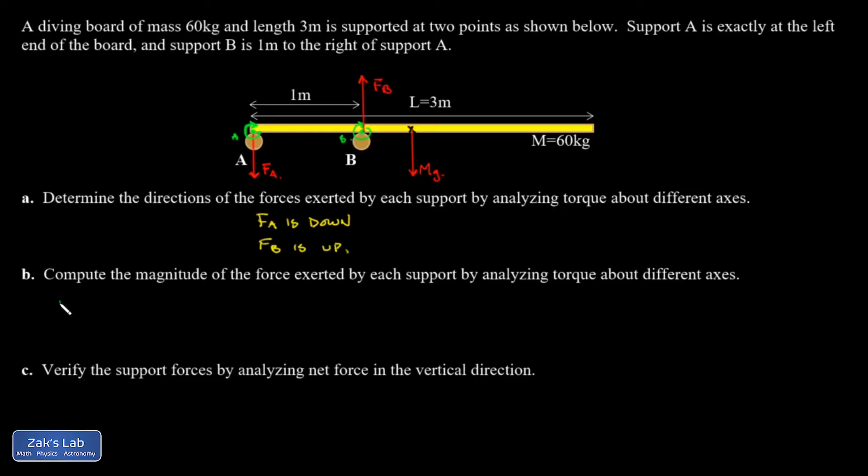And let's look at the torque with respect to rotation axis A. I have B pushing up. So I'm going to write down the sum of all the clockwise torques better be equal to the sum of all the counterclockwise torques. FB is exerting a counterclockwise torque and the force of gravity is exerting a clockwise torque. So my clockwise torque is going to be Mg through a lever arm equal to half the length of the diving board. And that's one and a half meters.